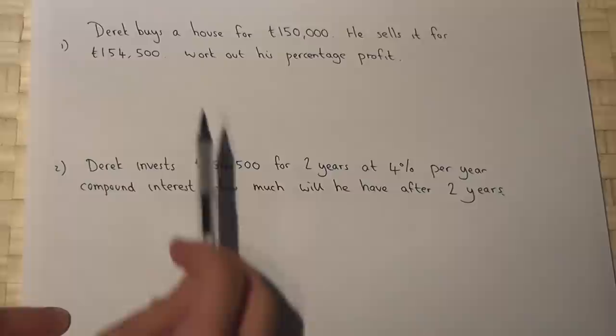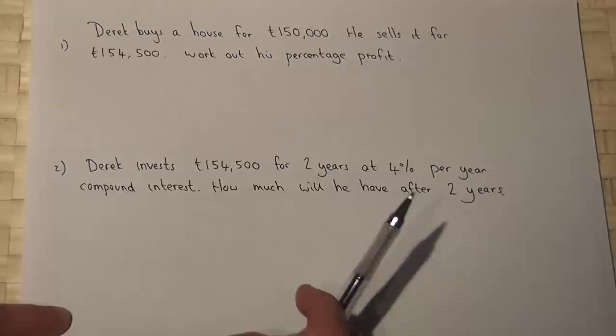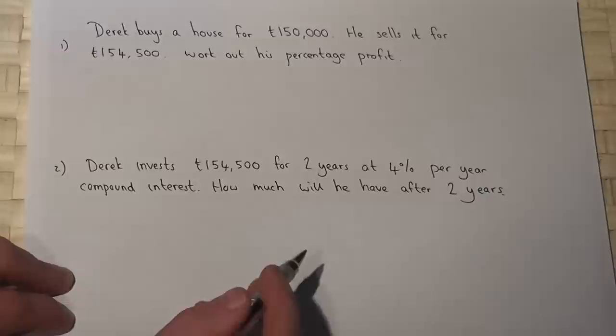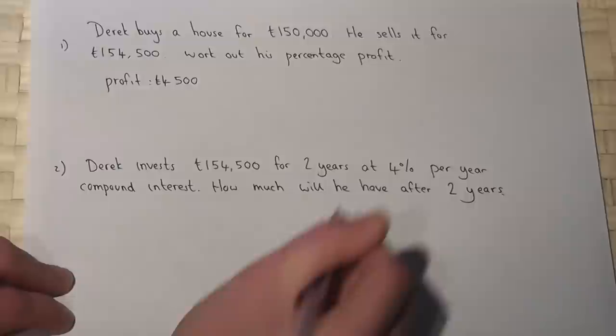Now in part one, we're told that Derek buys a house for £150,000, which he then sells for £154,500. And the question asks for his percentage profit. Now we can work out his profit by doing the difference between the amount he sells it for and the amount he bought it for. So his profit is £154,500 take £150,000, which is £4,500.